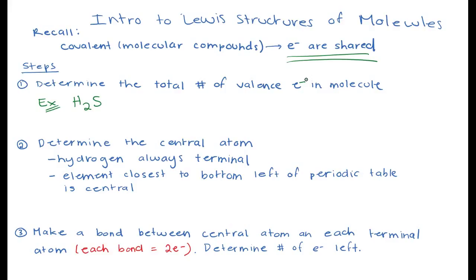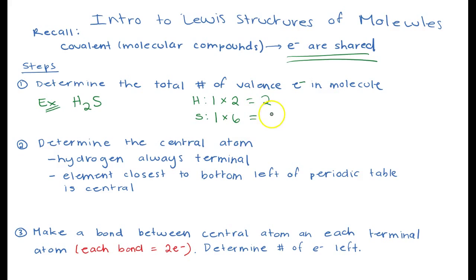We can look at the periodic table to figure out, based on what group number an element is in, how many valence electrons it has. Valence electrons are the outermost electrons that participate in chemical bonding. For hydrogen, each atom has one valence electron because it's in group one, and we have two of them, giving us two total. For sulfur, we have one atom in group six, so it has six valence electrons. That gives us a total of eight valence electrons.